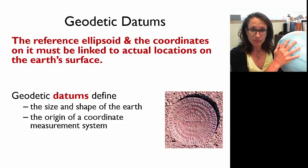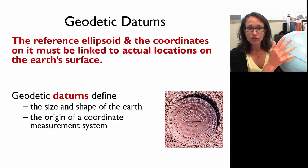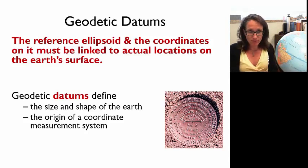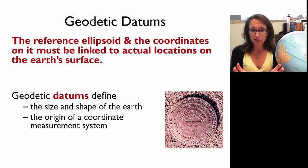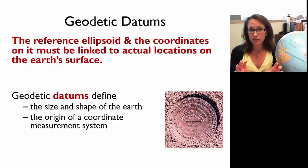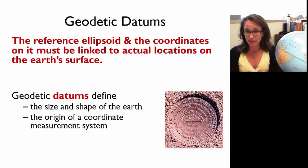Understanding what datum you're referencing your data to is really important, because if your datum changes, then your coordinate description for a physical position on the Earth will change. Conversely, if we take a coordinate pair referenced to one datum — say 30 degrees north and 100 degrees west — and plot it on a map referenced to one datum, it'll plot in one place. But if we plot it on a map referenced to another datum without adjusting the coordinates, the point will plot in a different place.